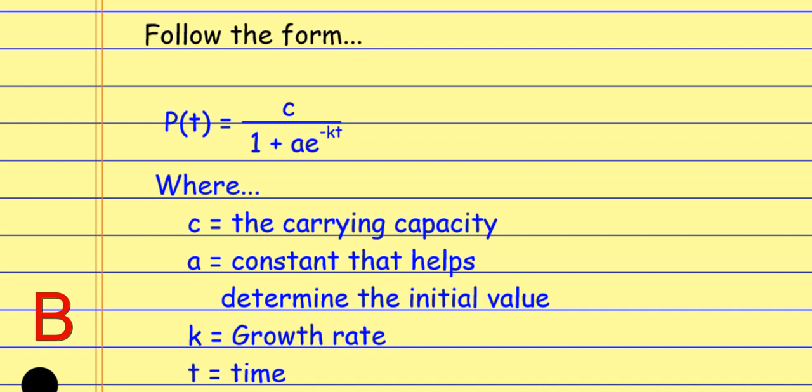Here's what the logistic model looks like. It has some elements of our uninhibited growth. Remember, our continuous model for exponential growth was A of T equals A times E to the KT. Here it's P of T — the population based on time. That's still function notation; I could have put a Y or A of T there. We see the A times E to the KT elements in there.